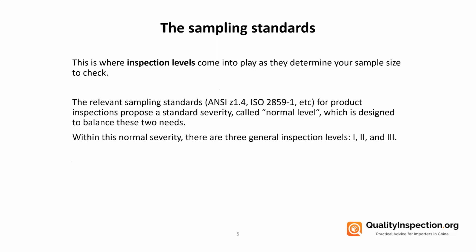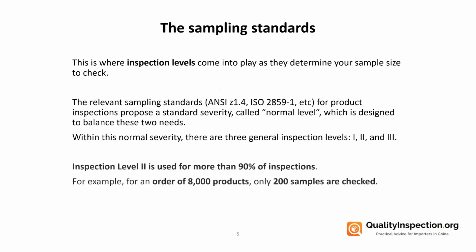The sampling standards have been around since the 1930s, and they propose a standard severity called the normal level, which balances the needs between being brief and checking enough samples. Within normal severity, there are three general inspection levels: one, two, and three, and we can see these on the AQL tables, which we're going to come to in a moment. Let's take an example of using inspection level 2, which is actually used for more than 90% of inspections.